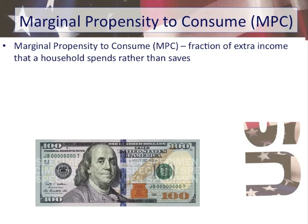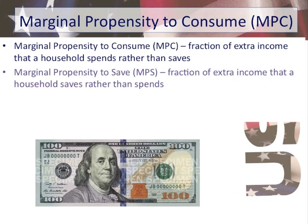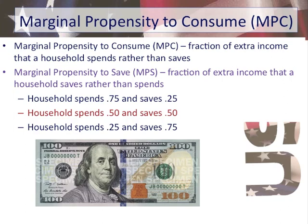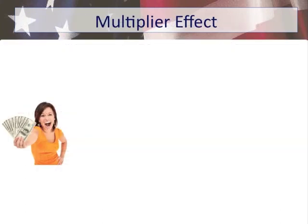The marginal propensity to consume is the percentage or fraction of income that you will spend rather than save. Likewise, the marginal propensity to save is the fraction of income that you save versus spend. We have MPC and MPS, which both give us an indication of spending behavior. If a household spends 75% of the hundred dollars, MPC is 0.75 and MPS is 0.25. If they spend 50%, MPC is 0.5 and MPS is 0.5.